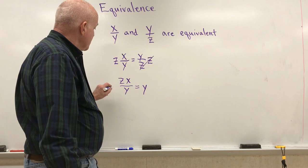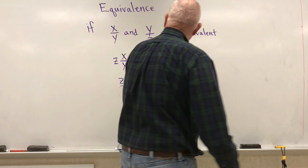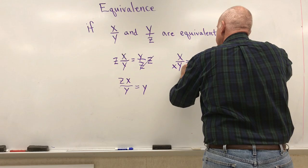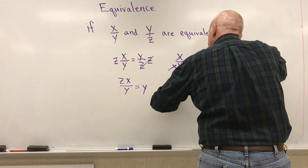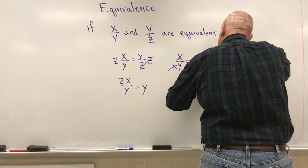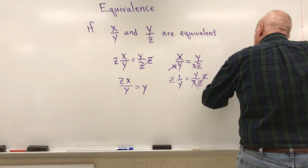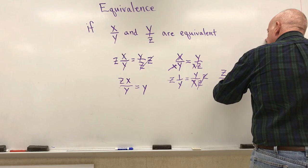Or I could go back and I could divide both sides by x. Let's redo this. We're going to go x over y equals y over z. And I'm going to divide both sides by x. Alright, that knocks that out. Now I have 1 over y equals y over x. And then I'm going to multiply both sides by z. And I end up with z over y equals y over x.